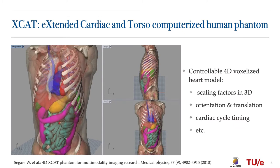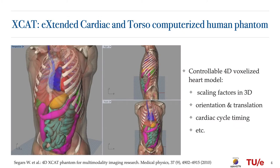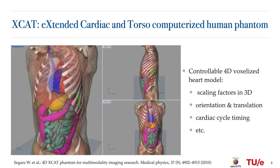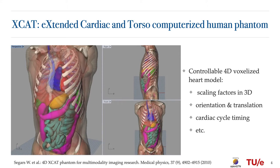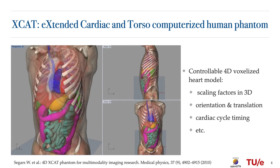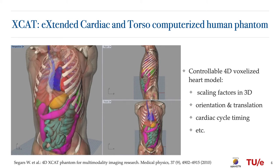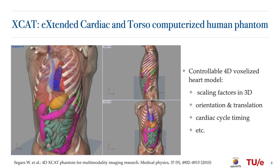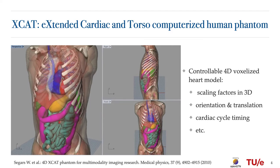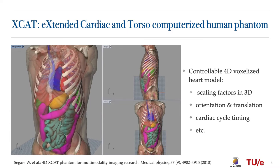The extended cardiac torso whole body models, or XCAD models, are one of the most comprehensive digital models covering a vast series of phantoms of varying ages from newborn to adult, each comprising parameterized models for cardiac and respiratory motions. The XCAD program offers various parameters to control the heart shape and motion, such as the scaling factors in 3D, the length of the beating heart cycle, left ventricle volumes, and so on. We can use this XCAD program to create accurate and controllable 4D voxelized heart models.